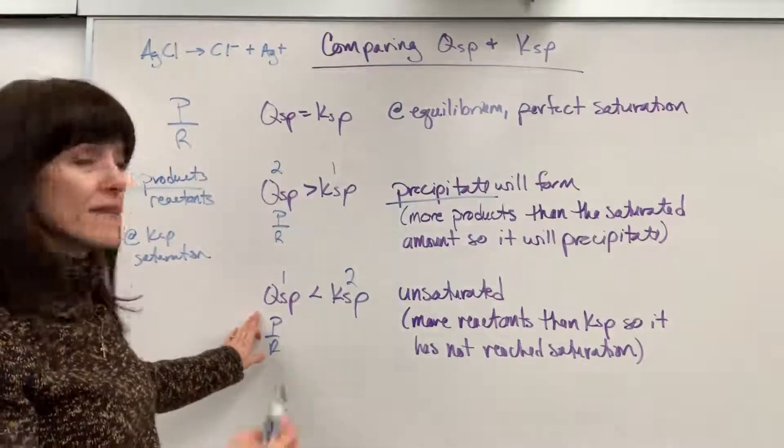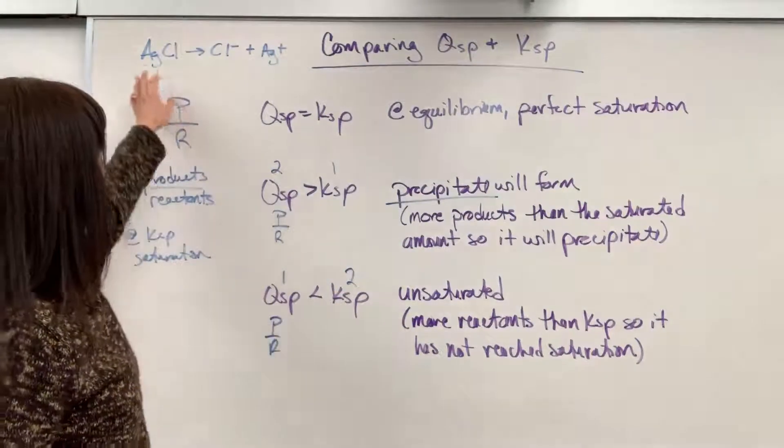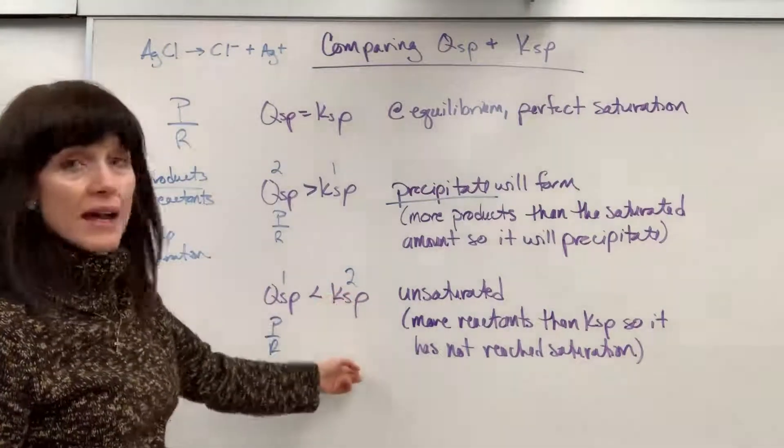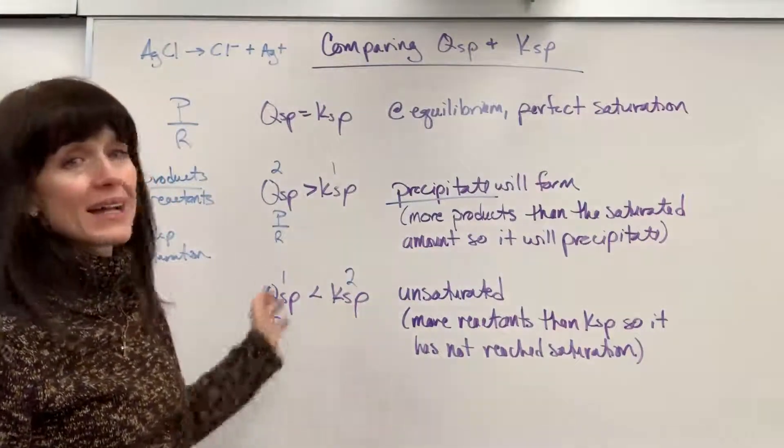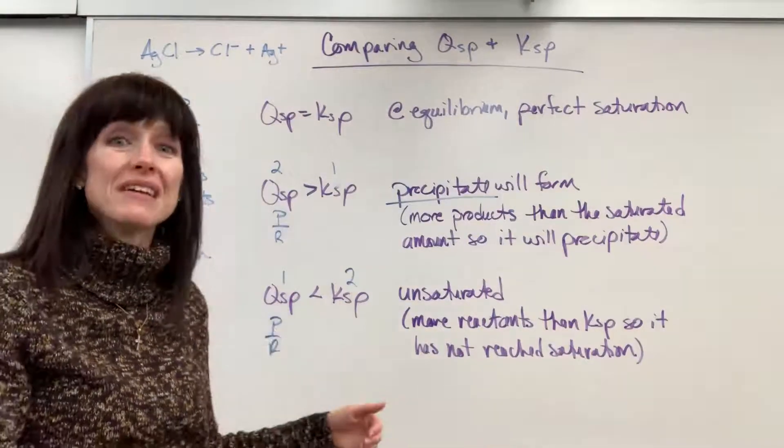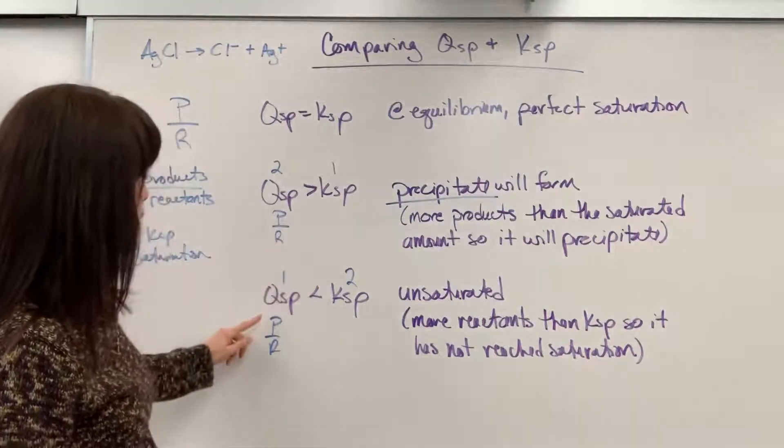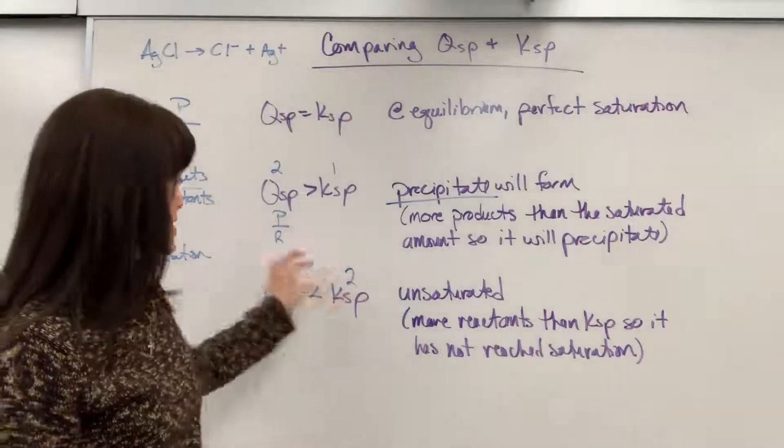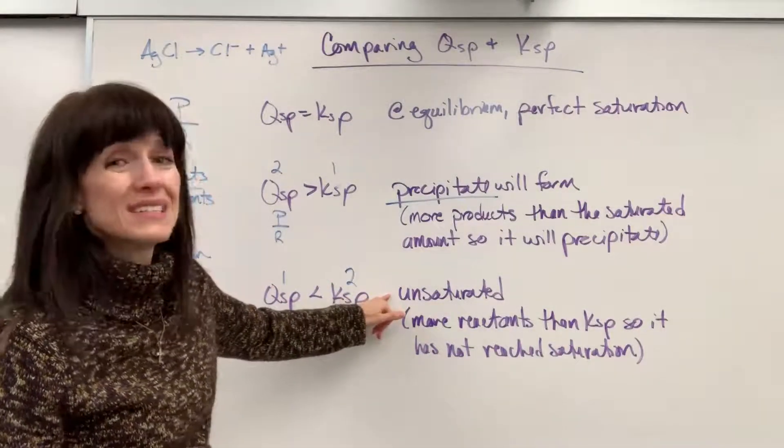So at this point, at this snapshot, it must be unsaturated. If I have more reactants at this moment, then at a perfect equilibrium scenario, it means I can actually dissolve more to reach KSP. To come up to that number two, I would have to get more products. So at this moment, QSP less than KSP, at this moment, it's unsaturated.